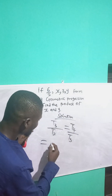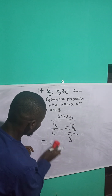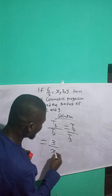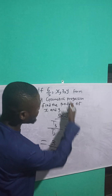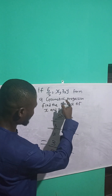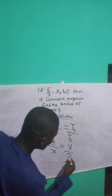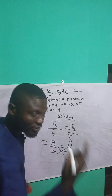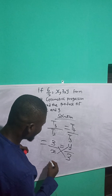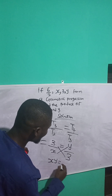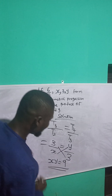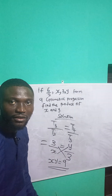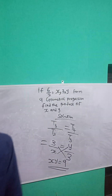The third term is 3, so we have 3 over t2, where t2 is x, equal to t4, which is y, over t3, which is 3. Cross-multiplying gives us x times y, so xy equals 3 times 3, which is 9. The value of xy in this geometric progression is 9.